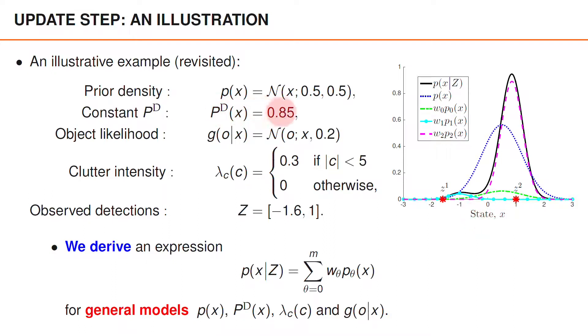The probability of detection is constant, and the object likelihood has a Gaussian form. The difference is that we now have a prior on X, which is Gaussian with mean 0.5 and variance 0.5, and we are going to compute the posterior density of X.